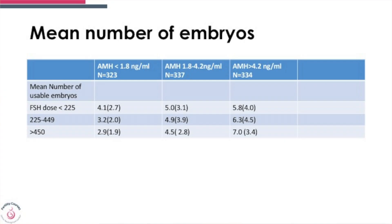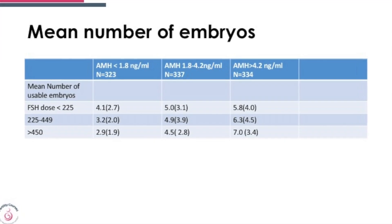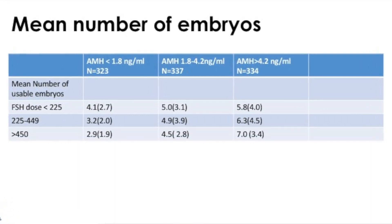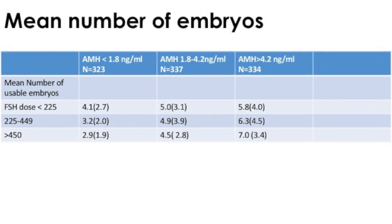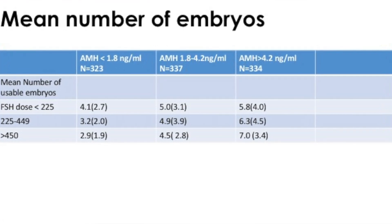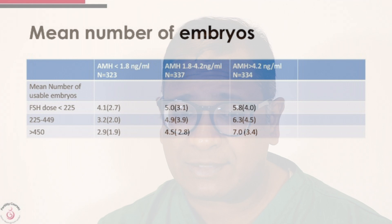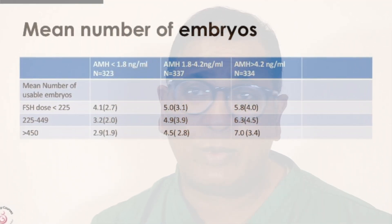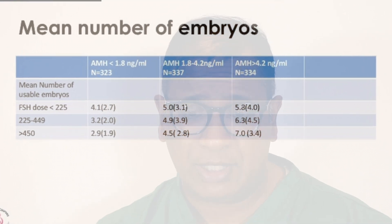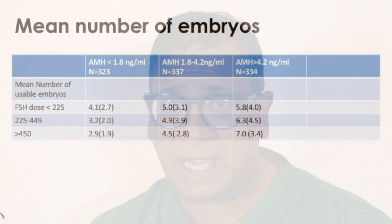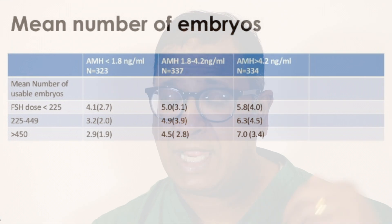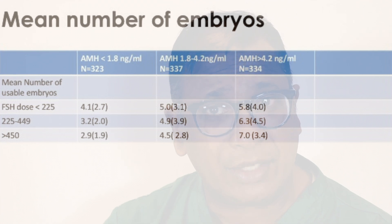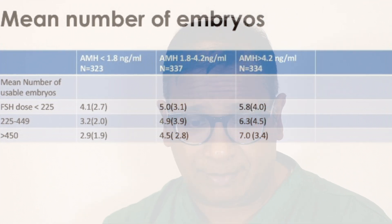Looking at available embryos: in low and normal AMH groups, the number of usable embryos also steadily decreased as the FSH dose increased. In the high AMH group, however, as the dose went higher, you had more usable embryos — completely different to what was seen in the low and normal AMH groups.